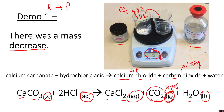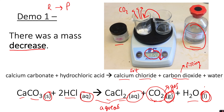G stands for gas. L stands for liquid — there are very few pure liquids, but H₂O water is one of them. Hydrochloric acid looks like a liquid but it's actually acid dissolved in water — when something is dissolved in water we call it aqueous and give it the symbol AQ. Calcium carbonate, which you saw was a powder, is a solid, so S stands for solid.